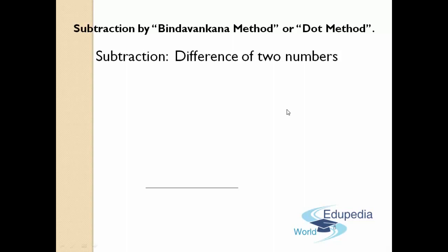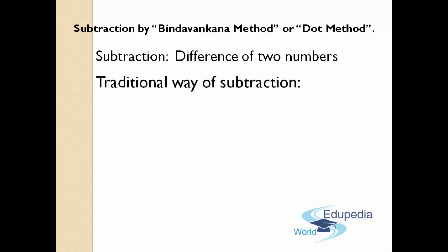Now let us see an example of subtraction — how we do it in our daily life, that is in our old-fashioned traditional way. I think you know how to do subtraction in the old-fashioned way. For an example, I have taken the number 423 minus 122. Usually, to do this subtraction, first of all you have to set them in specific rows and columns according to their place values like this.